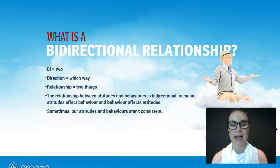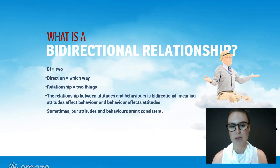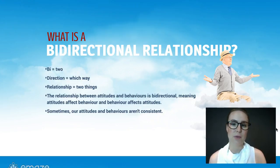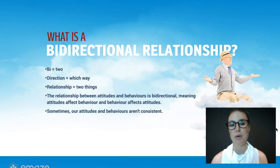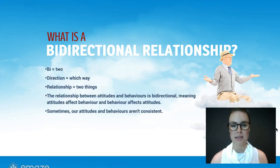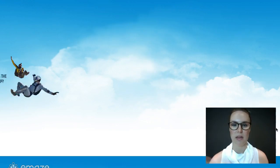The relationship between attitudes and behaviour is bi-directional, which means that attitudes affect behaviour and behaviour affects attitudes. So it's really important to understand that they can both affect each other, and also that sometimes our attitudes and behaviour aren't consistent with one another.